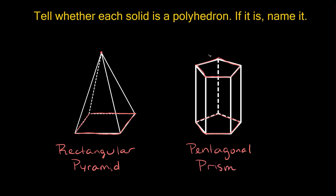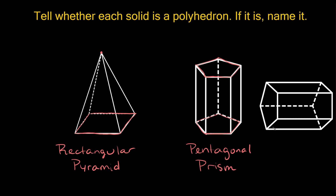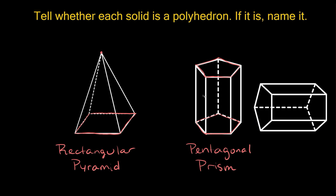Prisms have two faces that are congruent. Sometimes they'll be on the top and bottom like they are here; sometimes they'll be side to side. For instance, this is the exact same shape — all I did was flip it to the side. We still have those same faces, just on the sides — but this is still a pentagonal prism. Pyramids, on the other hand, have all their sides meeting at a single point. Those are the two differences between pyramids and prisms.